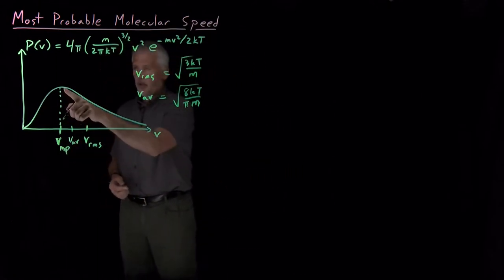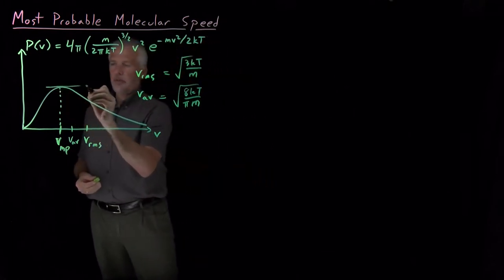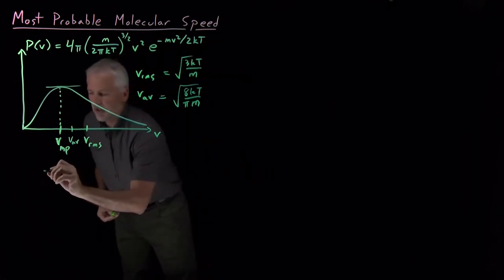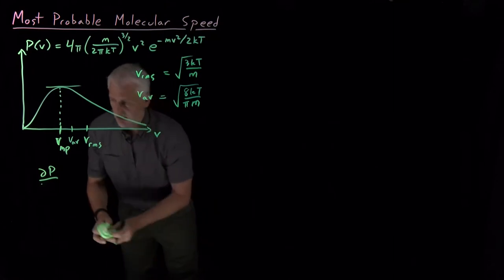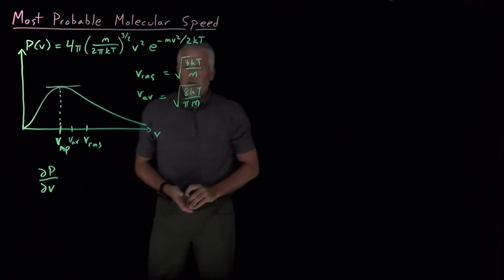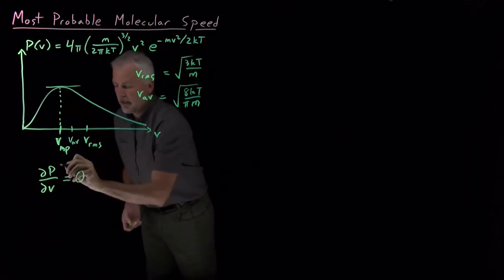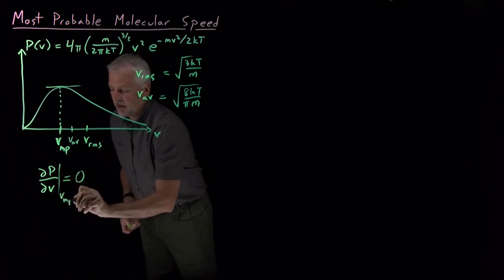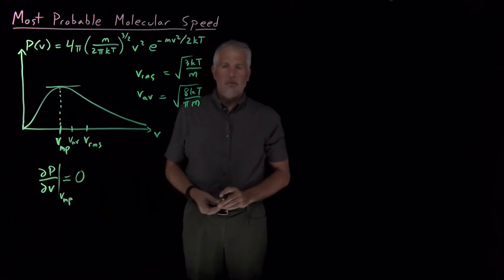The thing we know about the peak of a distribution is that the slope of the distribution is flat at that point. So we know the derivative of P with respect to V is equal to zero when we're at the peak. When we evaluate that at the most probable velocity, the slope of this distribution is equal to zero. That's how we can find the most probable velocity.